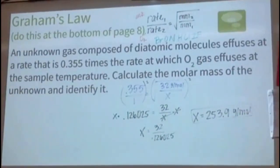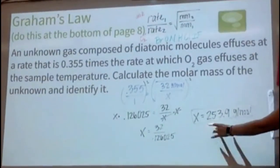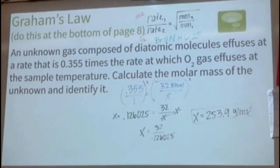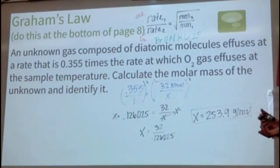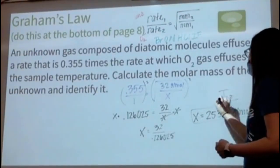The molar mass of the unknown gas is 253.9 g/mol. Since it's diatomic, divide by 2: ~126.9 g/mol per atom. Looking at the periodic table, iodine is 126.9 g/mol. So 126.9 × 2 ≈ 253.9 g/mol — the unknown gas is I2. Graham's law of effusion lets us relate effusion rates to molar masses.